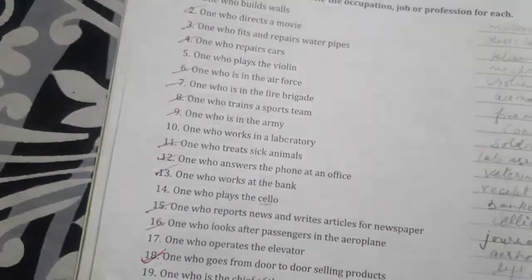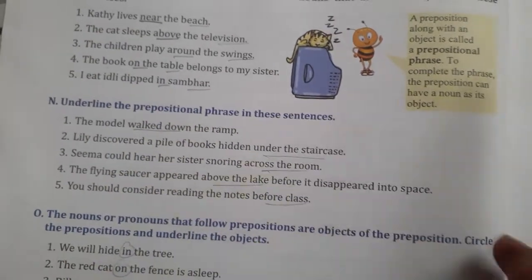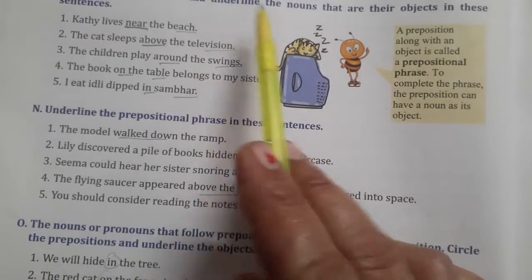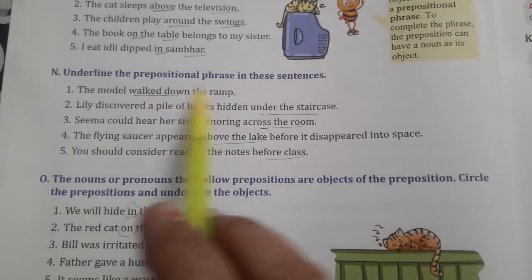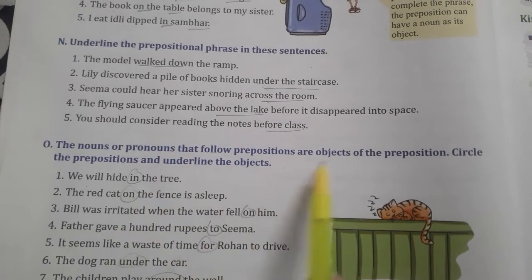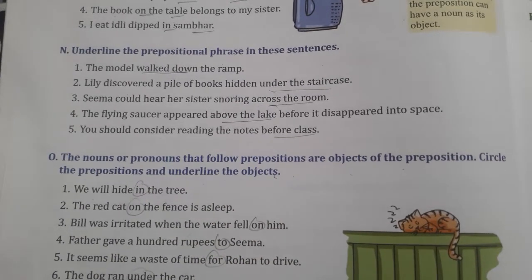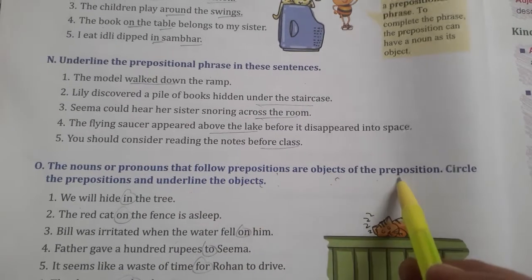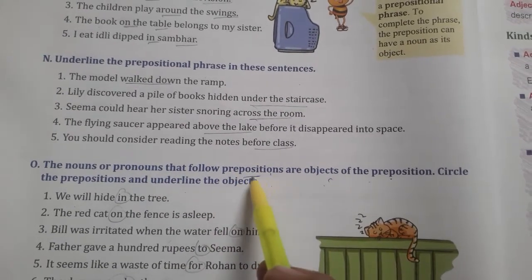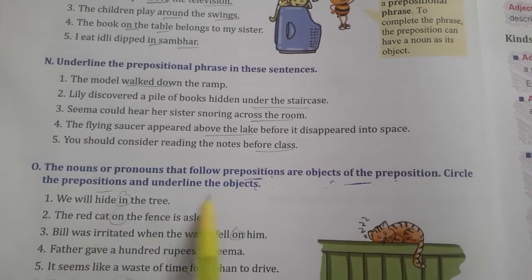Now do the rest of the exercises in this lesson. Circle the preposition and underline the nouns that are the objects. Underline the prepositional phrase in the sentence — the nouns or pronouns that follow the preposition are objects of the preposition. Also match the prepositions to the correct noun phrases.